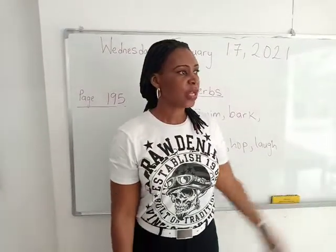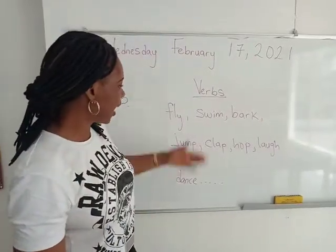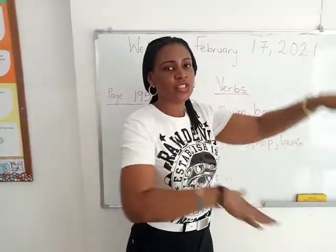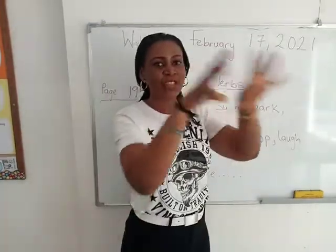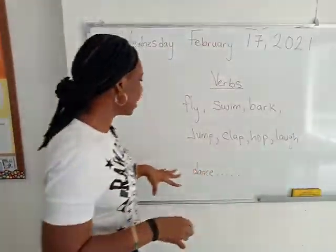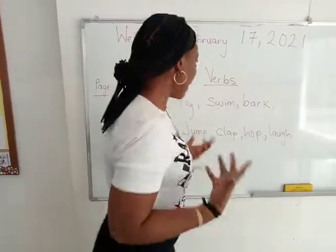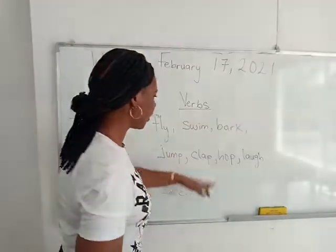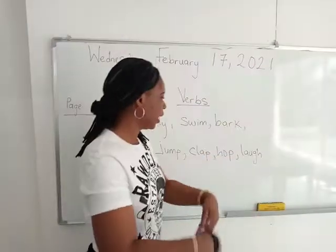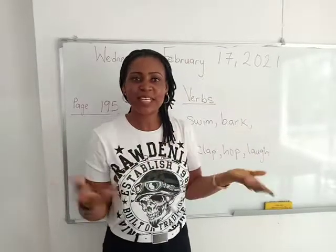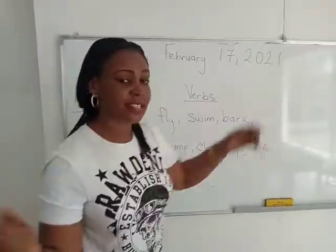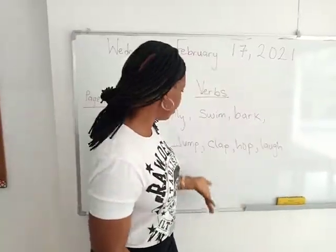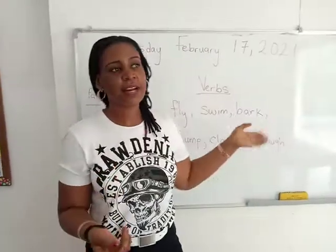So today I have a list of verbs on the board: fly, swing, nager, bark — like a dog is barking, the sound a dog makes — jump, like jumping, it's action. Clap — I'm doing something, clapping. Hop, like a kangaroo hops. Laugh — ha ha ha ha — Mrs. Witcher is laughing, right? It's action. Dance. So we talked about verbs being action words, and here I have a few verbs that show action.